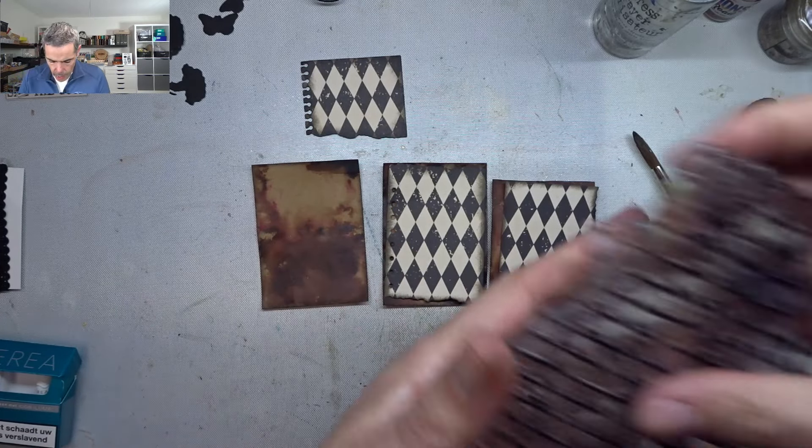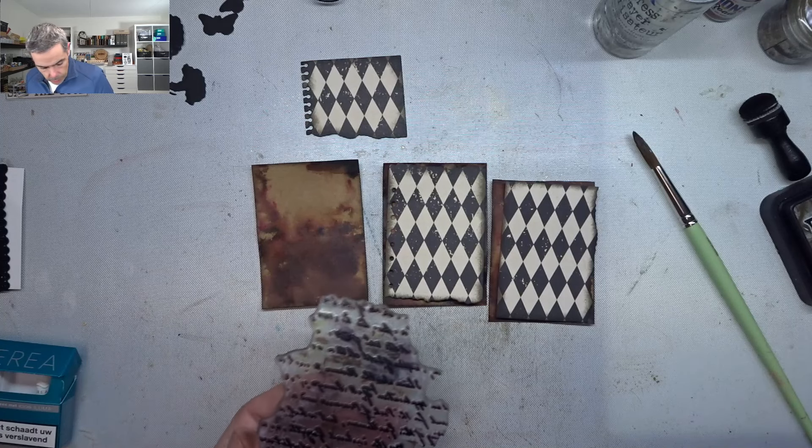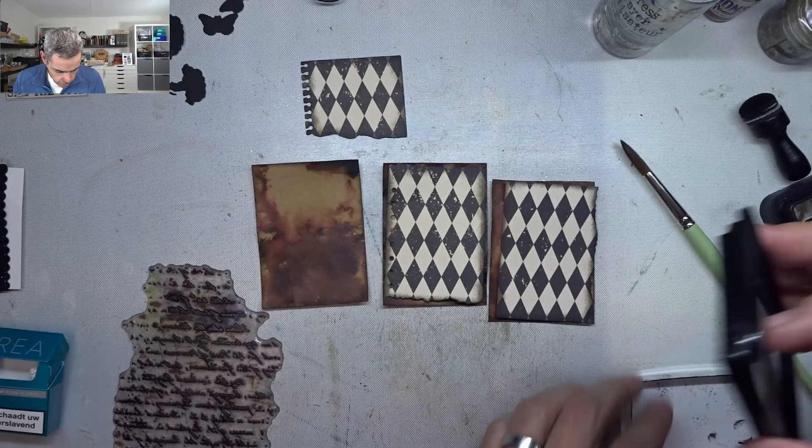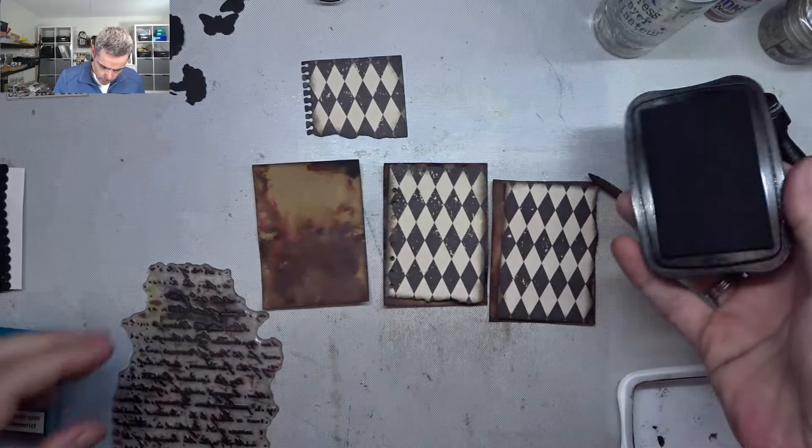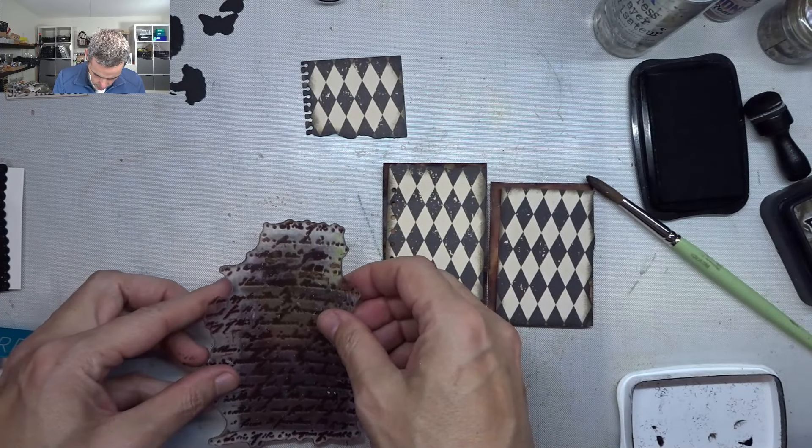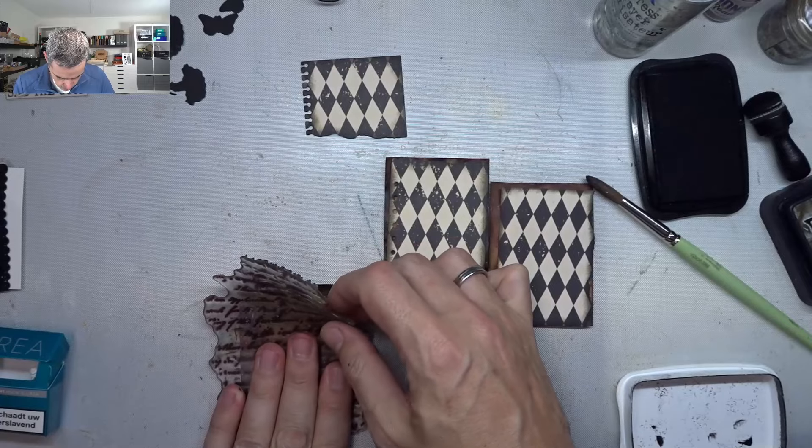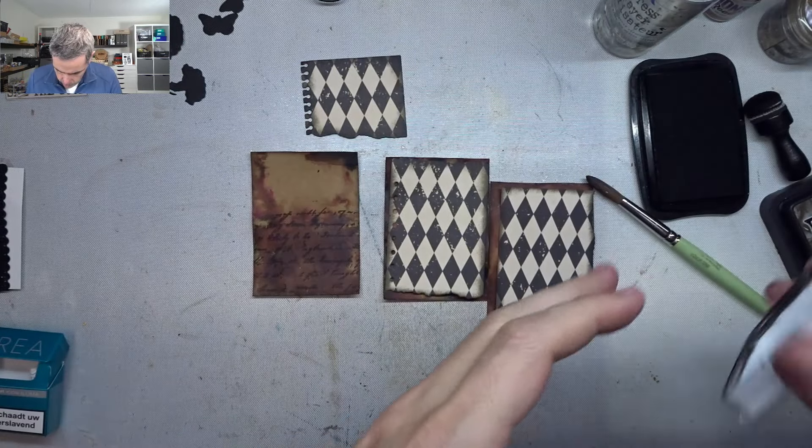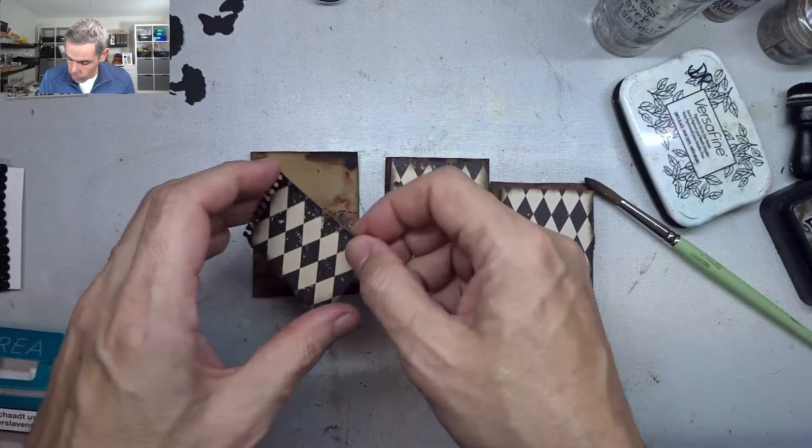So I'm just going to take my script stamp. I'm going to stamp using my black. I'm going to get my Versafine out and just ink up that bottom bit and stamp that on there. See that? That just gives it some more texture, even more texture.